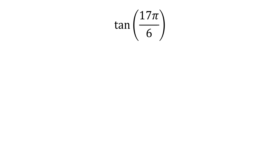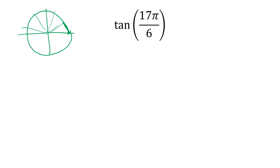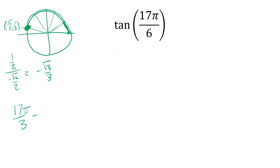Tangent of 17π/6. That's outside my 0-to-2π range. One full rotation is 12π/6, so counting up: 13π/6, 14π/6, 15π/6, 16π/6, 17π/6 — that's a 30-degree reference angle in quadrant 2. The coordinates are (-√3/2, 1/2), so tangent is 1/2 divided by -√3/2, which equals -√3/3. Alternatively, 17π/6 minus 12π/6 gives 5π/6, which lands in the same spot. The answer is -√3/3.